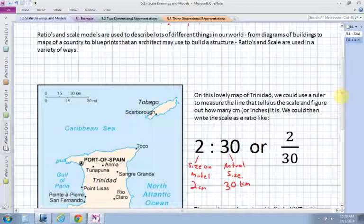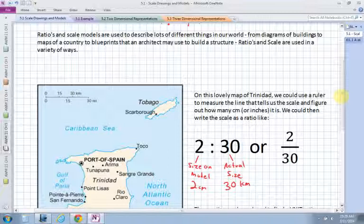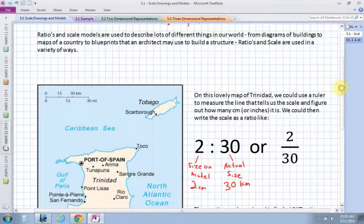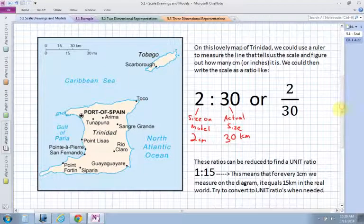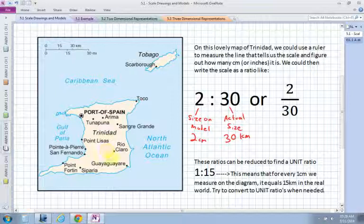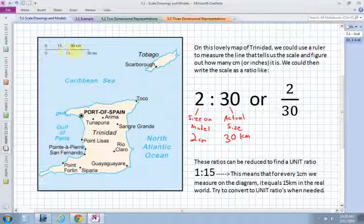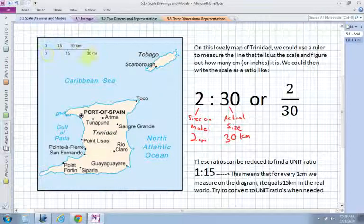As you know, ratios and scale models are used to describe lots of different things, buildings and diagrams and things like that. Here we have a map of Trinidad. So I picked up this map, they have this little scale up here. What I've done is I've actually measured the distance of this. This is blown up considerably, but when I measure the distance, it actually measures about 2 centimeters long.